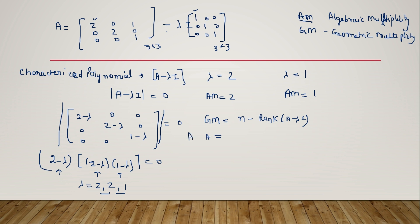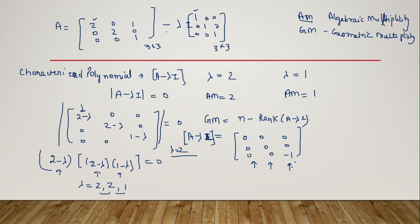Let's find geometric multiplicity for lambda equals two. We compute A minus lambda I by substituting lambda equals two: two minus two is zero, so we get a matrix where the diagonal entries become [0, 0, 0], [0, 0, 0], and [1, 0, minus one]. Two columns have all zero elements; only one column has a non-zero element, so the rank is one.